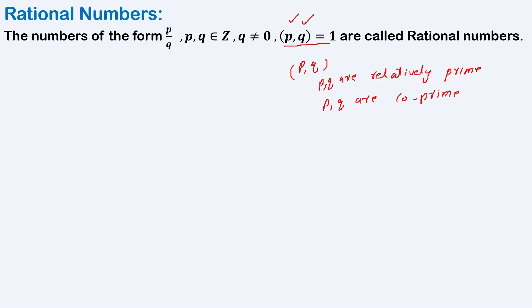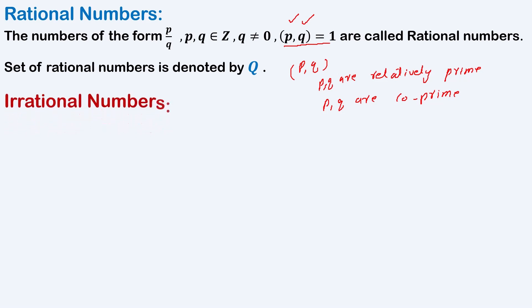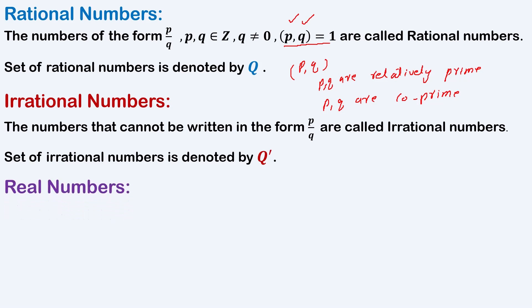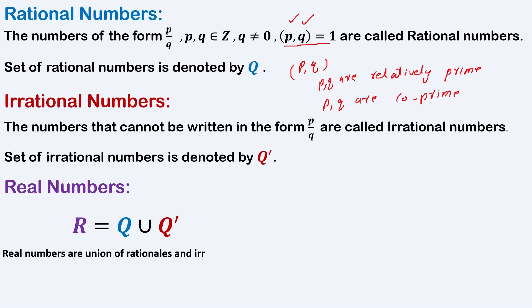We shall make use of this condition to show that the square root of 2 is irrational. The set of rational numbers is denoted by Q. The numbers that cannot be written in the form p over q are called irrational numbers, and the set of irrational numbers is denoted by Q dash. So we have two basic types of numbers: rational numbers and irrational numbers. The set of real numbers is the union of rational and irrational numbers. Also, the intersection of Q and Q dash — that is, rational and irrational numbers — have nothing in common.